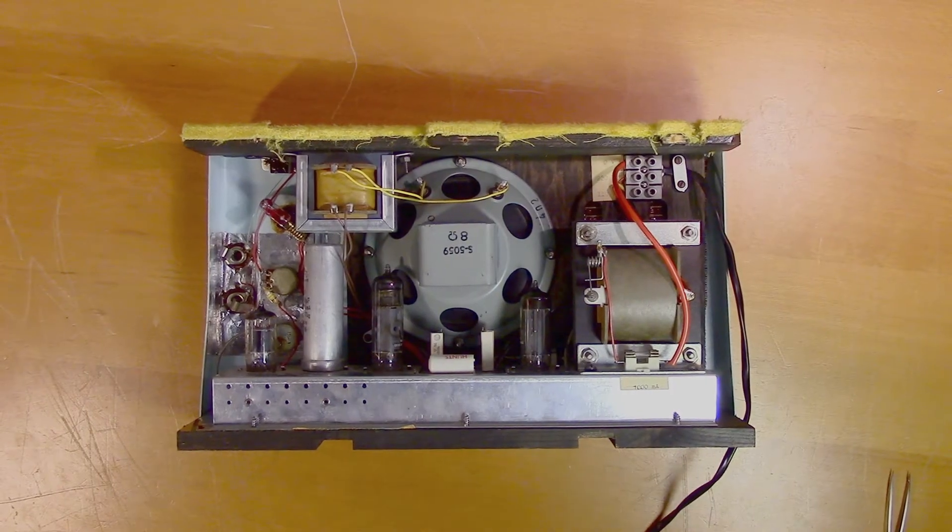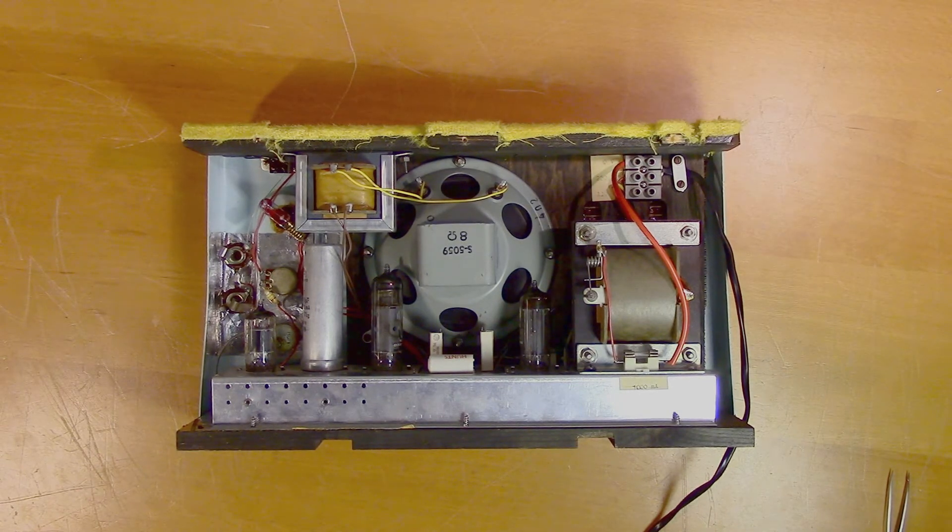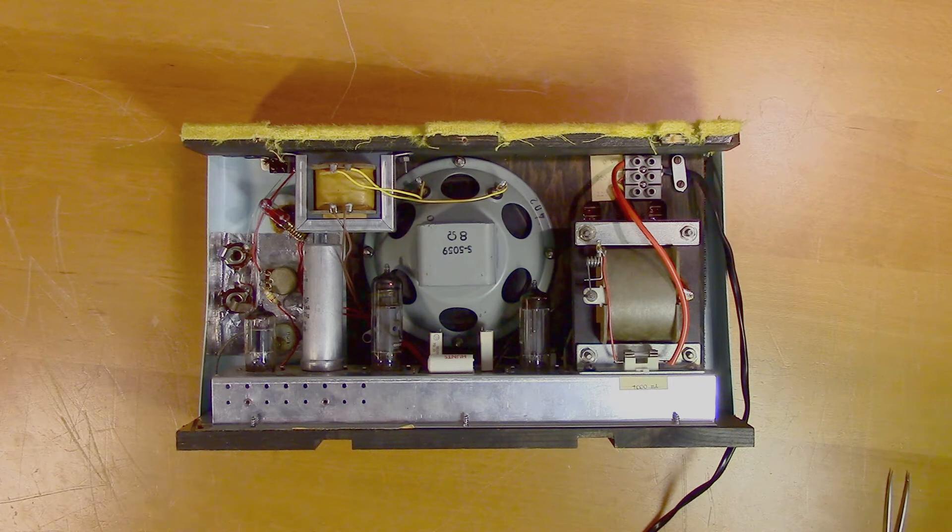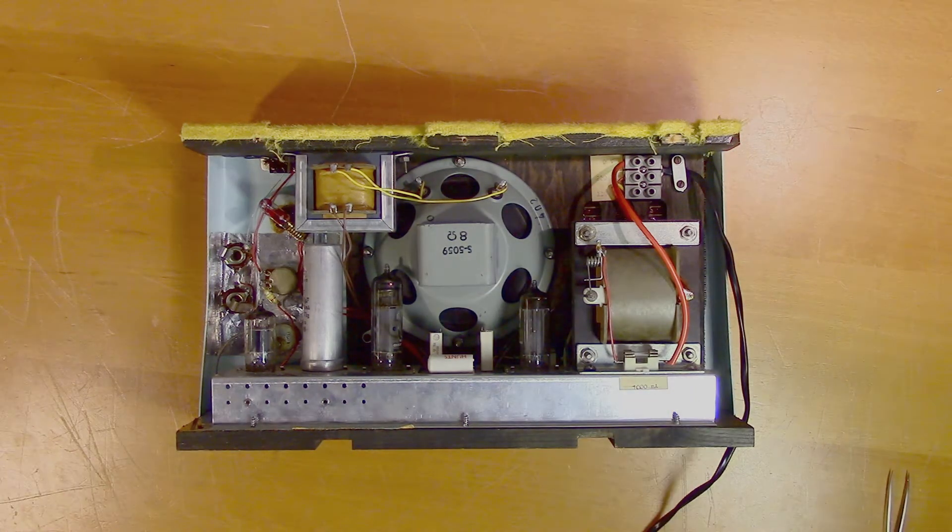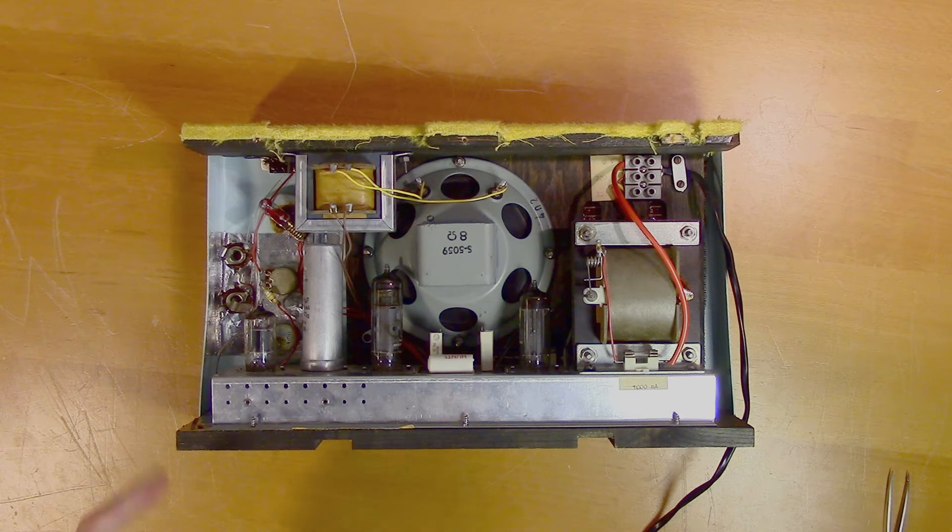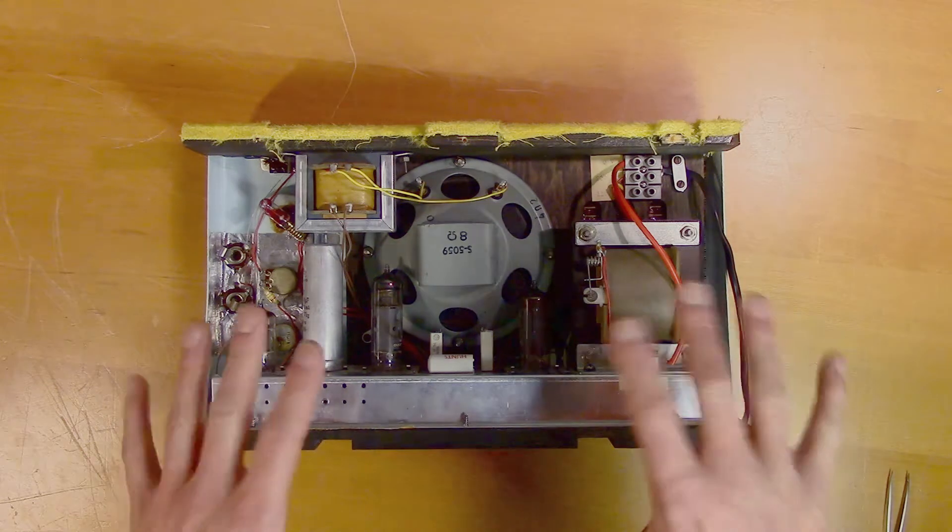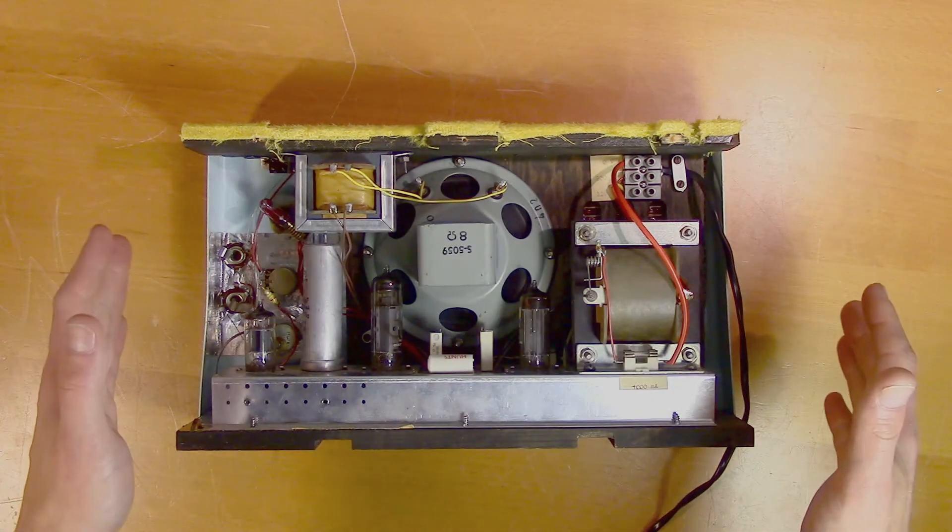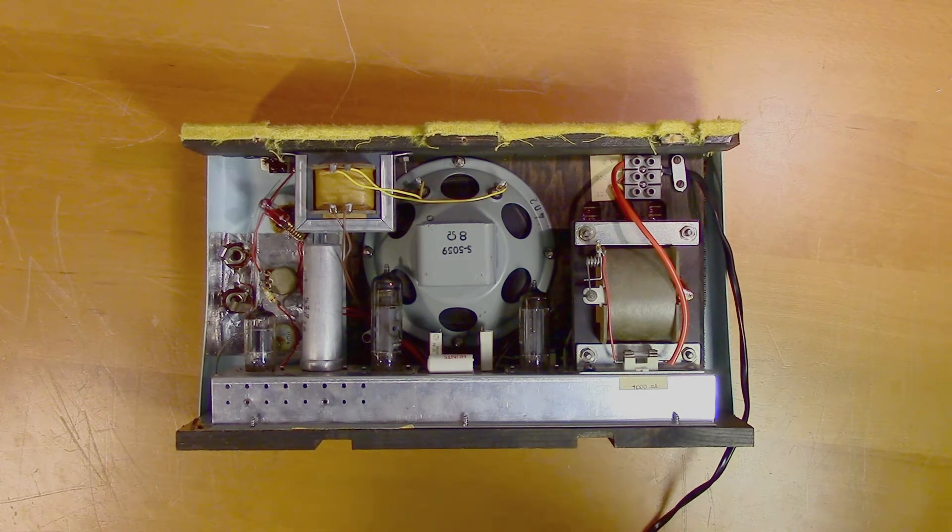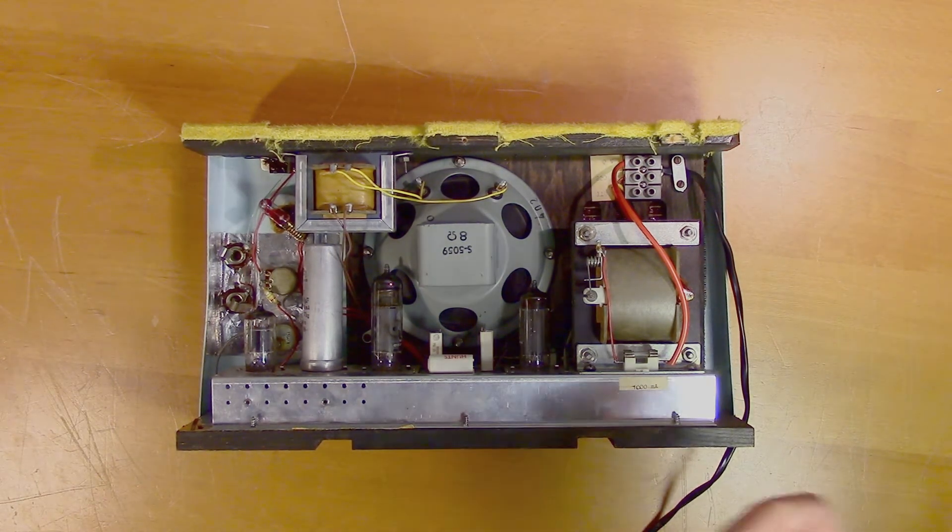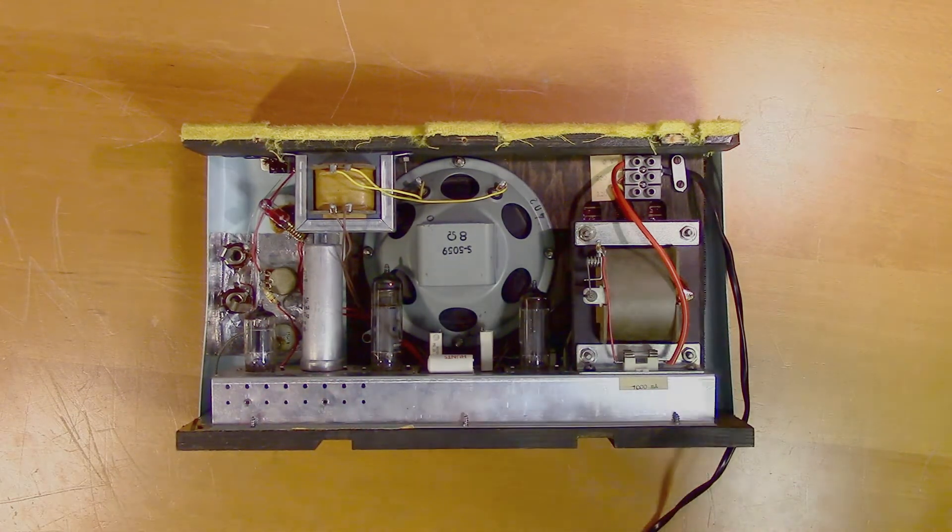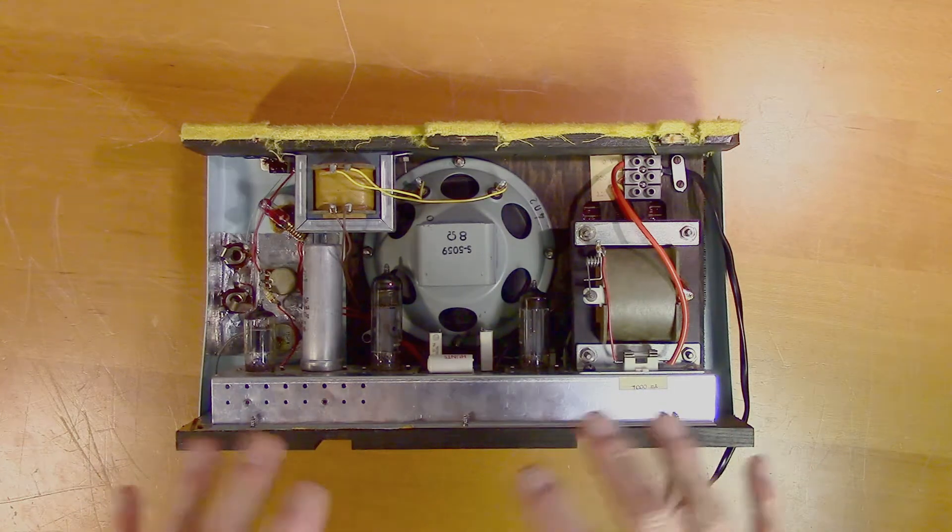Now the problem with this unit is excessive hum. And there is something that will make this troubleshooting process a bit more complicated. And that is that this unit was not delivered with its outer case. And you can tell that that might be a problem by looking at this copper tap. So the purpose of this tap is to ground the rest of the case. And that means that the rest of the case is used as a shield for electric fields. So the complication here will be to determine whether or not the hum comes from something that is wrong in the circuit, or something that comes from the outside because of bad shielding.